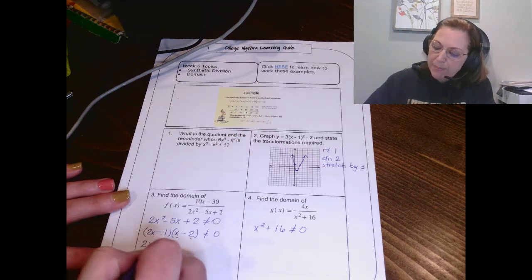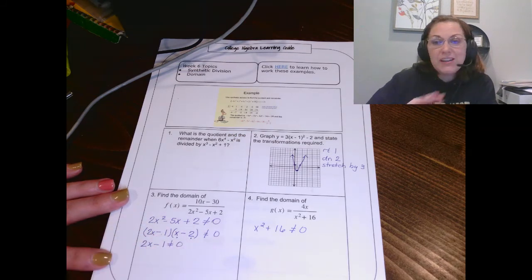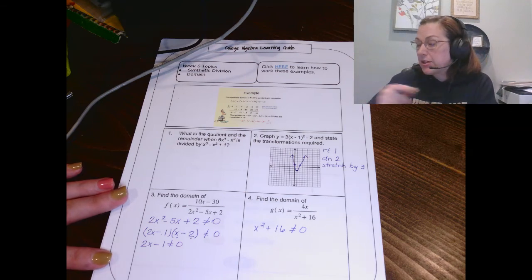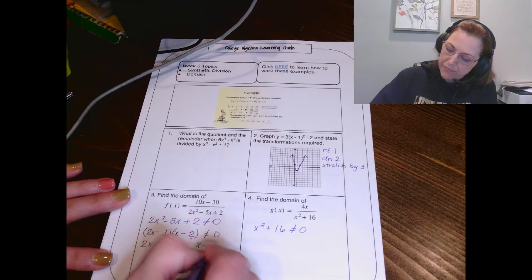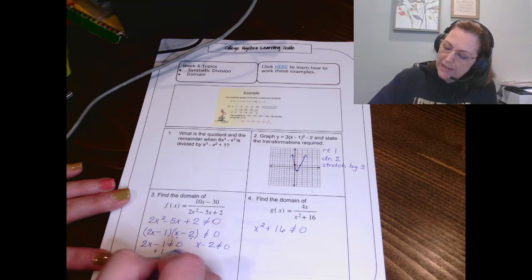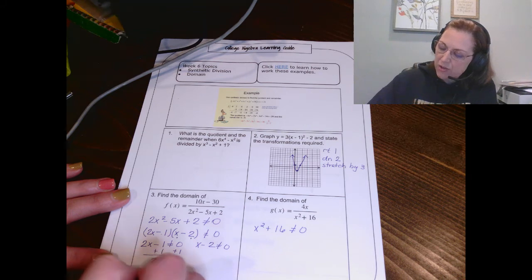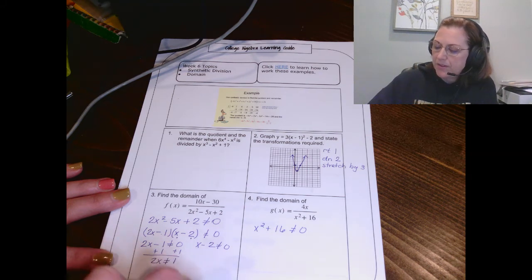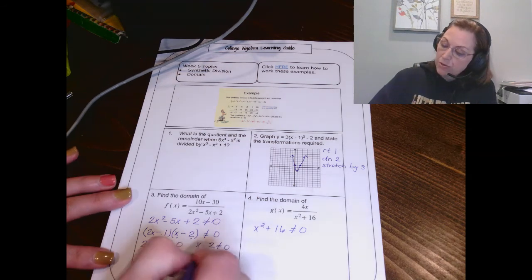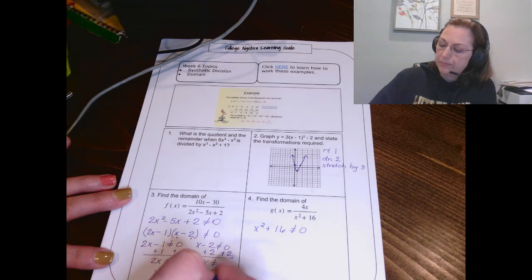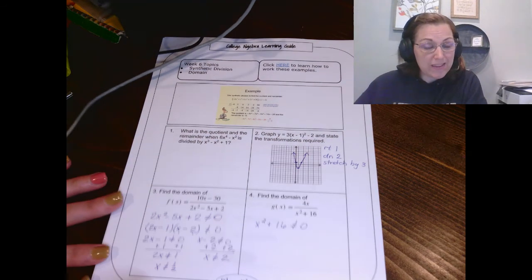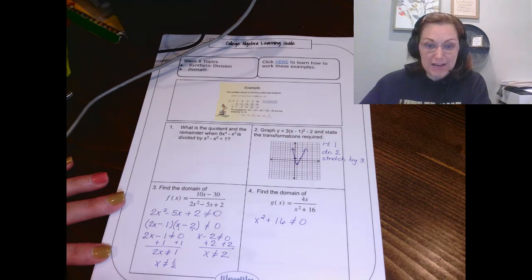Now break these apart. Solving them just like it would if this was equal to zero, you're going to solve the does not equal zero the same way. So you can add your 1. You get that 2x does not equal 1. So x does not equal 1 half. Or you can add your 2 here and you get that x does not equal 2. So your domain is everything, but x cannot be 1 half and x cannot be 2.